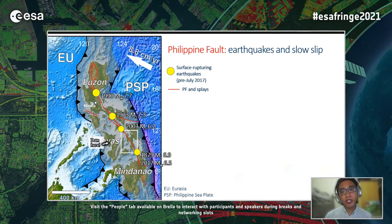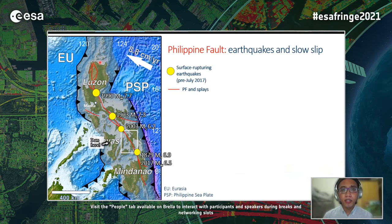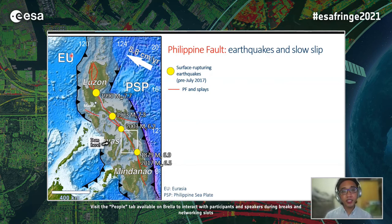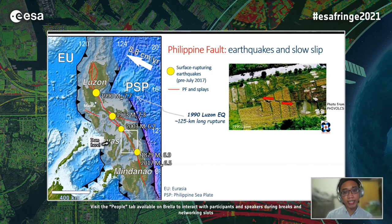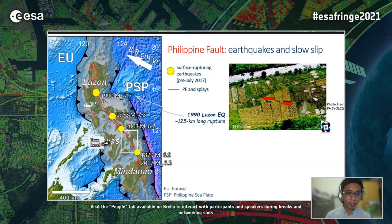The Philippine fault is a 1,200 kilometer long left-lateral strike-slip fault. As shown on the map, this fault traverses the Philippines' largest islands, from Mindanao in the south all the way to Luzon in the north, where Manila is. This fault formed as a consequence of strain partitioning caused by oblique convergence between the Philippine Sea plate in the east and Eurasia. The yellow circles represent the location of known surface-rupturing earthquakes, including the magnitude 7.7 Luzon earthquake in 1990, which involved left-lateral offsets of up to 6 meters on the ground.